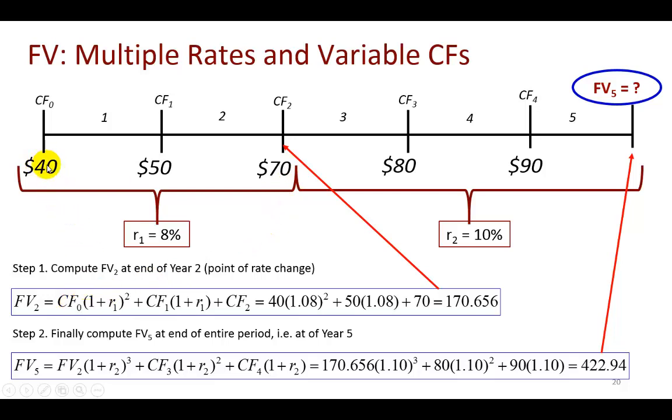That's what I've done here. This $40 is going to be compounded over two periods at 8%, as you see right here. This $50 is going to be compounded over one period at 8%. And then this $70 is simply added to these because this occurs at the point where value is being determined at the end of the second year, which is this guy right here.